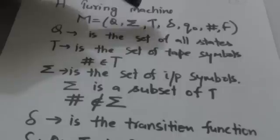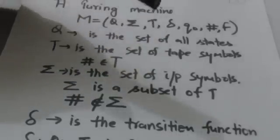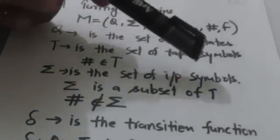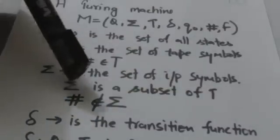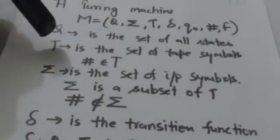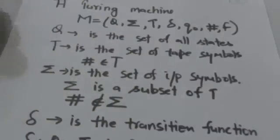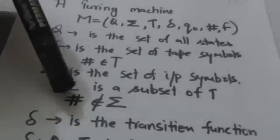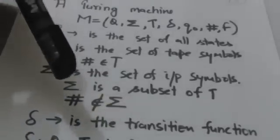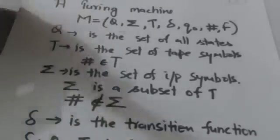Sigma is the set of all input symbols. Sigma is a subset of T, but the blank symbol does not belong to Sigma.